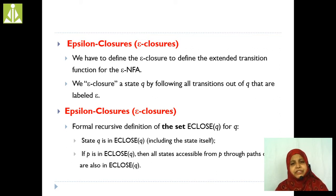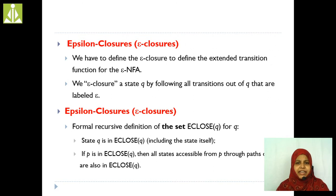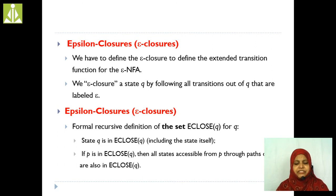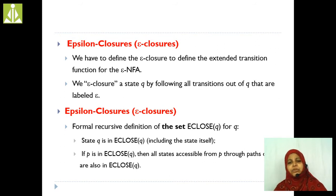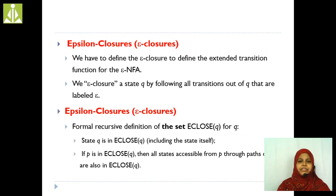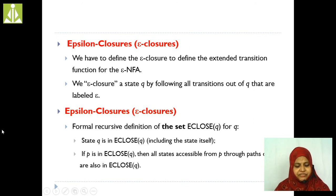Whenever we are going to convert this NFA with epsilon moves to without epsilon moves, first we have to find the epsilon closure for each and every state present in that particular NFA. Epsilon closure is needed to define the extended transition function for the epsilon NFA.